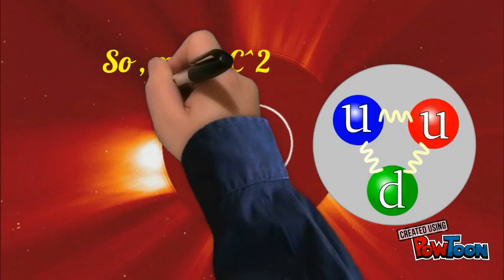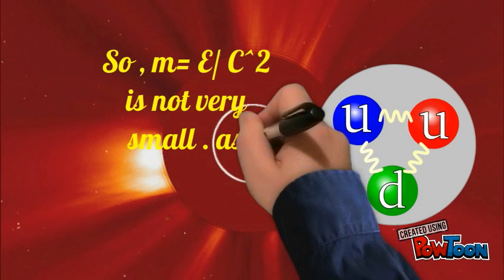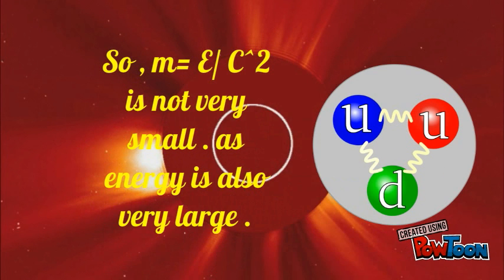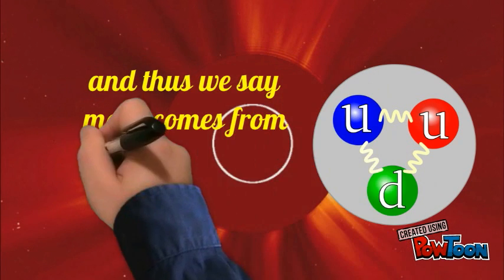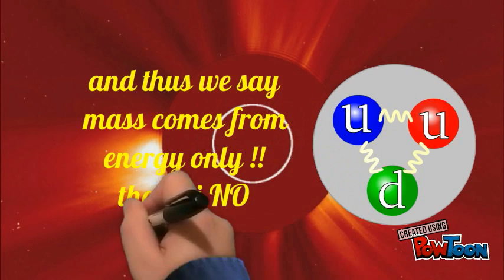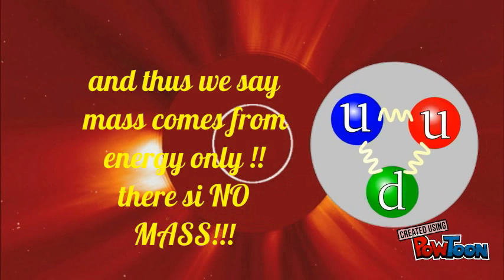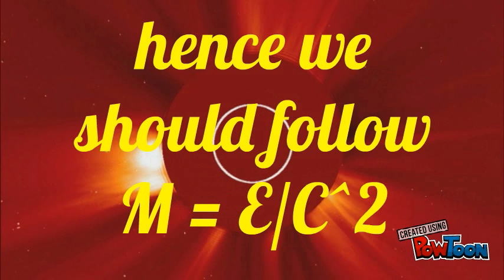So now m equals E over c squared. The mass is not very small as energy is also very large which comprehends the c squared, and thus we say mass comes from energy only. There is no mass. Hence we should follow m equals E over c squared.